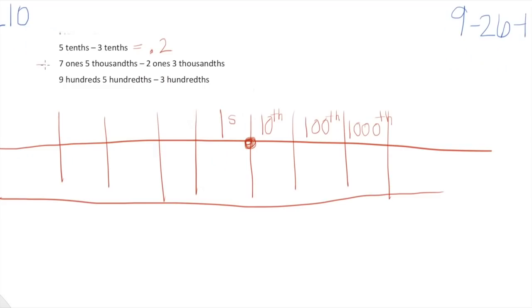Next we are starting with seven ones and five thousandths, then we're taking away two ones and three thousandths. Let's go ahead and model what we are starting with on the place value chart: one, two, three, four, five, six, seven ones, and then we also have five thousandths — four, five. So we have seven ones and five thousandths. Tenths are blank and hundredths are blank because we don't have anything there.